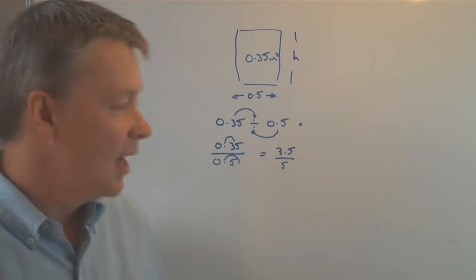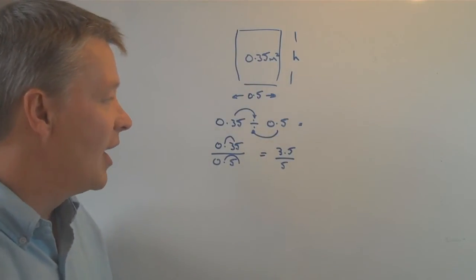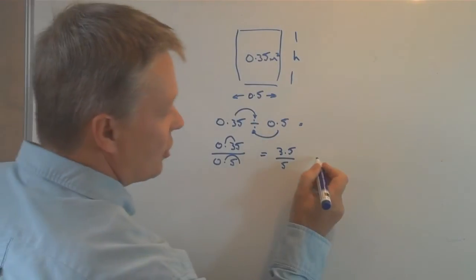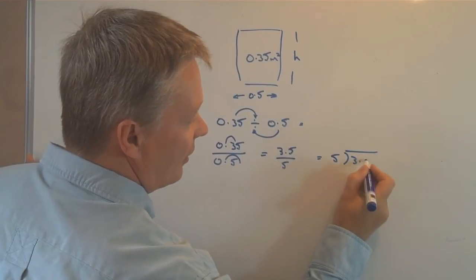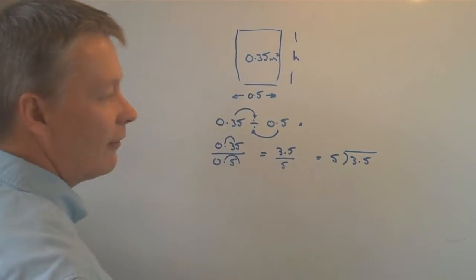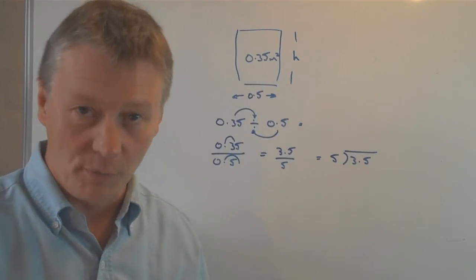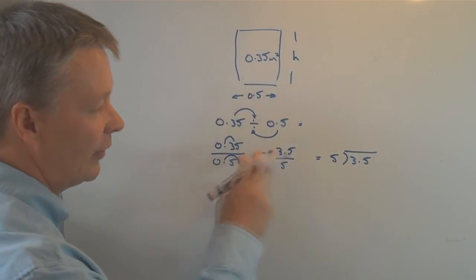Okay, well that's all right. 3.5 divided by 5 is absolutely fine. If I wanted to, I could rewrite that as a short division where I calculate how many lots of 5 there are in 3.5. That's perfectly legitimate to finish the problem in that particular way.